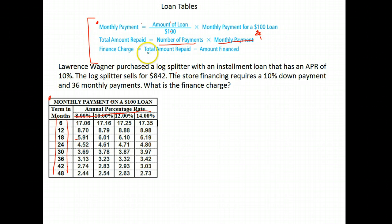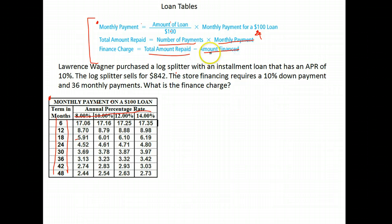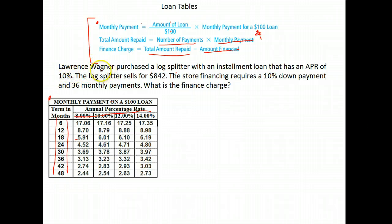Finally we find the finance charge. The finance charge is any extra that was added to your balance — any extra that you paid. So you take the total amount you paid and subtract from that the amount of your loan, or the amount you financed.